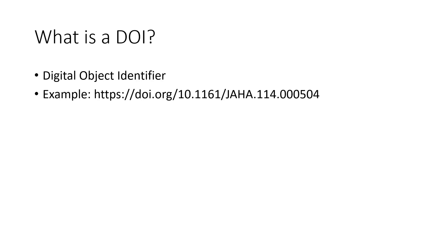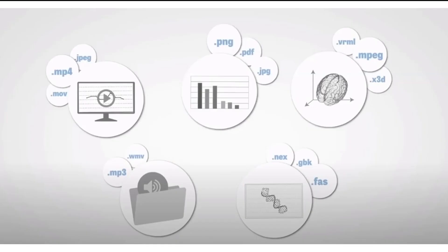Digital objects are more than just research articles in text format. Digital objects can include images, videos, diagnostic procedures, research data, patient data, audio recording of interviews, data from biochemical analysis or genome sequencing. DOIs can be assigned to files of all of these formats, ranging from .mp4 to .fas.